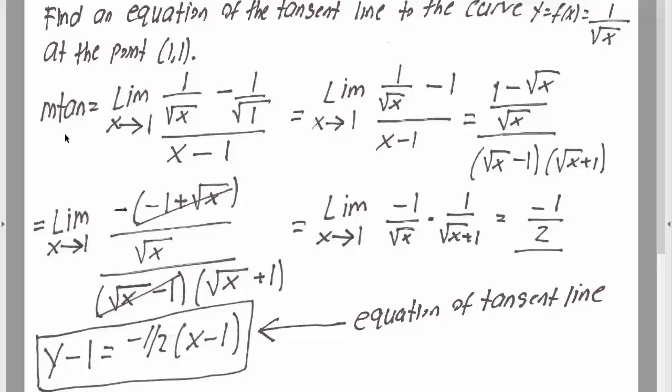Now we need to calculate the slope of the tangent line. So we have limit x approaches 1, and we're going to do the difference in function values. So 1 divided by square root of x minus 1 divided by square root of 1, divided by x minus 1.